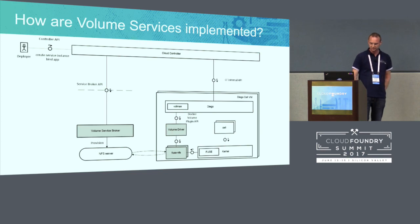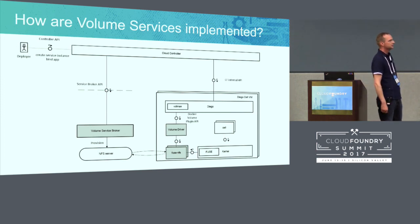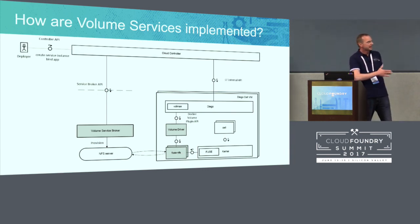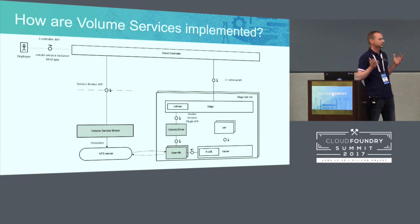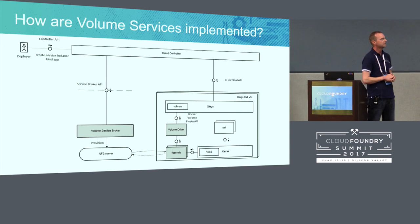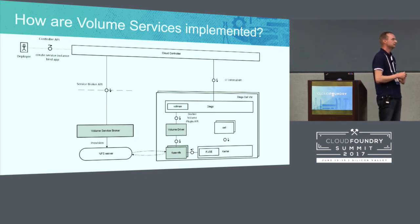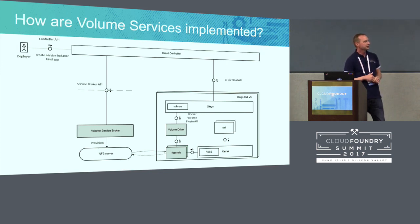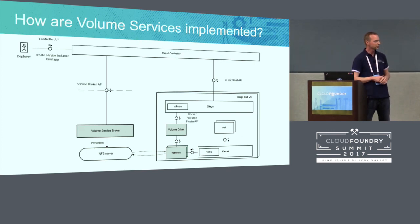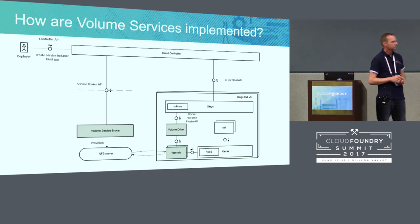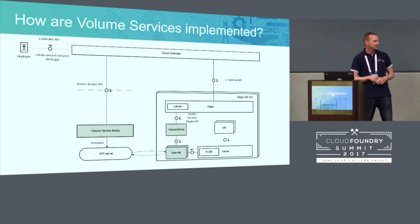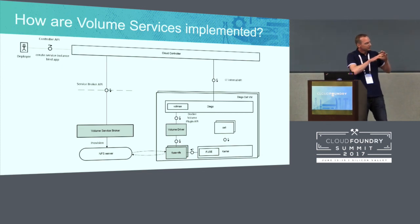Now let's deep dive into the architecture. Starting on the upper left with the deployer actor, who interacts with the volume service broker just as with any service broker. They query the marketplace to see what plans are available and decide which plan to use to create a service instance. Using the CLI, the call goes to the Cloud Controller, which transforms it into the broker API provision call. When this provisioning call hits our volume service broker, it depends on how the NFS server is in the landscape — it could be external or managed as part of the installation as we do.